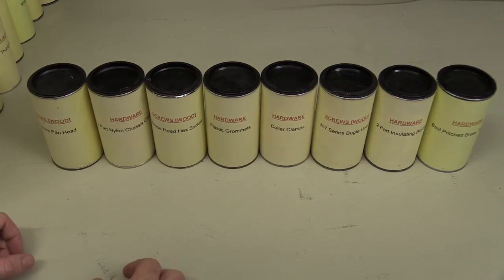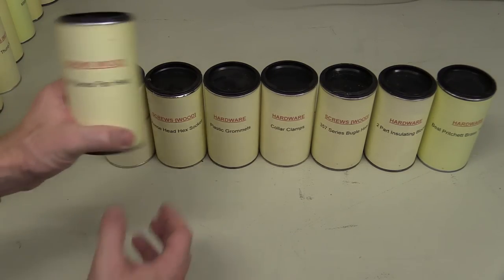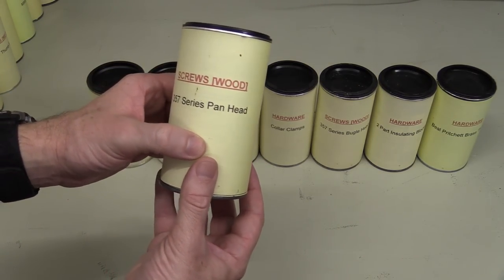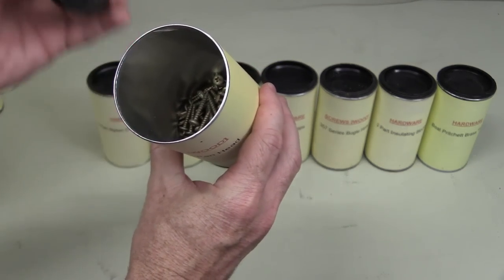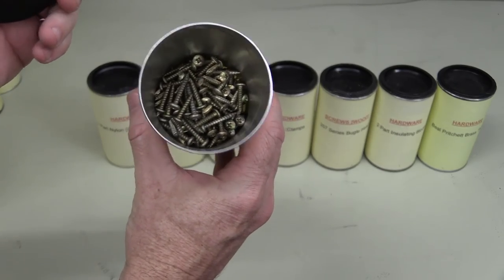Completely random here, I've got these eight ones which were sitting down the side here. So let's have a look. 3-5-7 series pan head. Let's take a look. There we go, look at all that. They look actually pretty new, awesome.